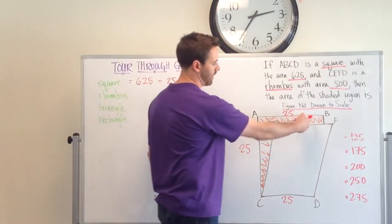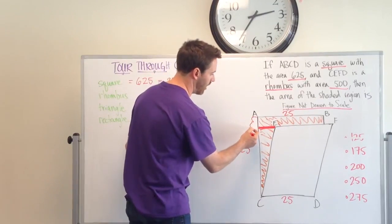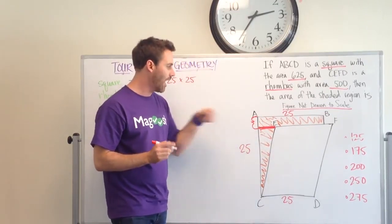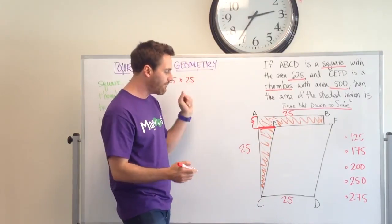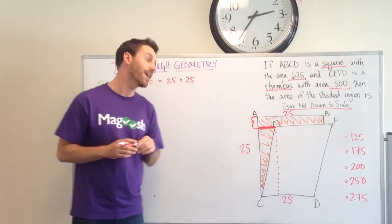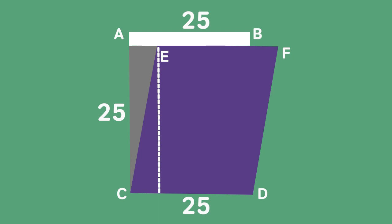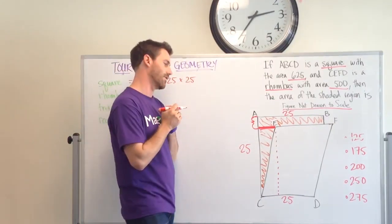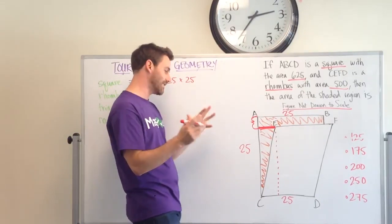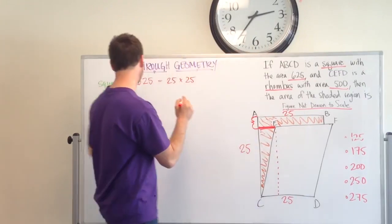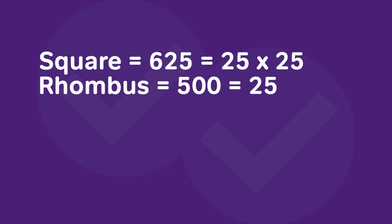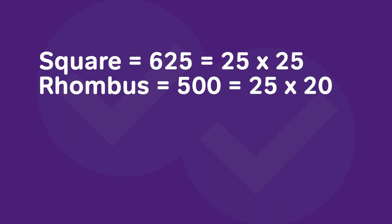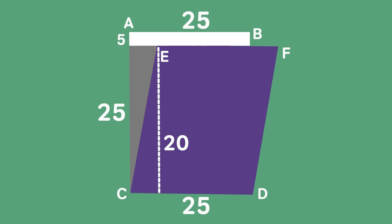I'm pretty close to actually solving the area of this rectangle here. I just need to find the length of this part right here. I know the whole thing is 25. If I knew the height of my rhombus, then I could subtract the height of the rhombus from 25 and know that there. So who remembers what the area of a rhombus is or how to calculate the area of a rhombus? It's the base, 25, times the height. I know the area of the rhombus is 500. I know that the base is 25. What times 25 gives me 500? It is 20. So now I know that the height here is 20. So that means that this is going to be 5.